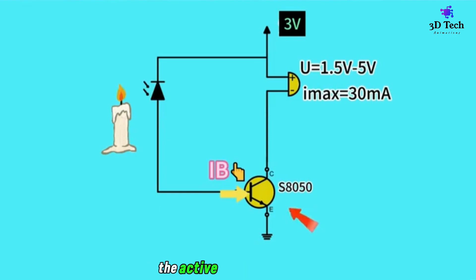The transistor now acts as a closed switch, so the voltage of the buzzer at this time is almost equal to 3 volts, which is the normal working voltage, and the buzzer starts alarming.